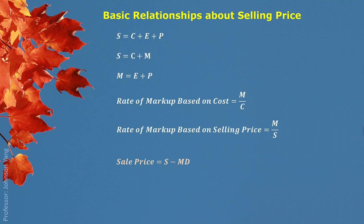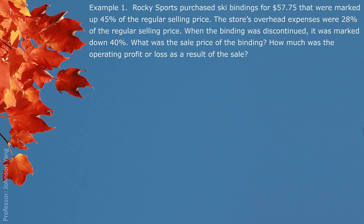We have two basic indices to show the business situation. One is called the written markup based on the cost: markup divided by cost. Another one is called the written markup based on selling price: markup divided by regular selling price. When the regular selling price is cut down, we call the part being cut markdown, represented as MD. Sale price equals regular selling price minus markdown. Written markdown is markdown divided by regular selling price.